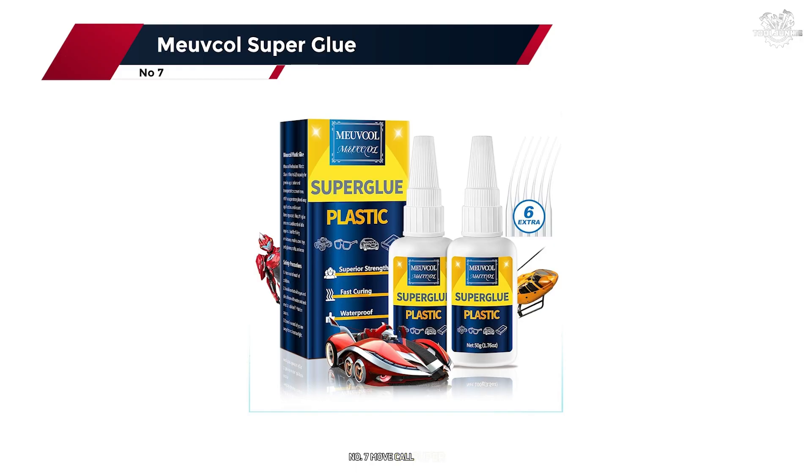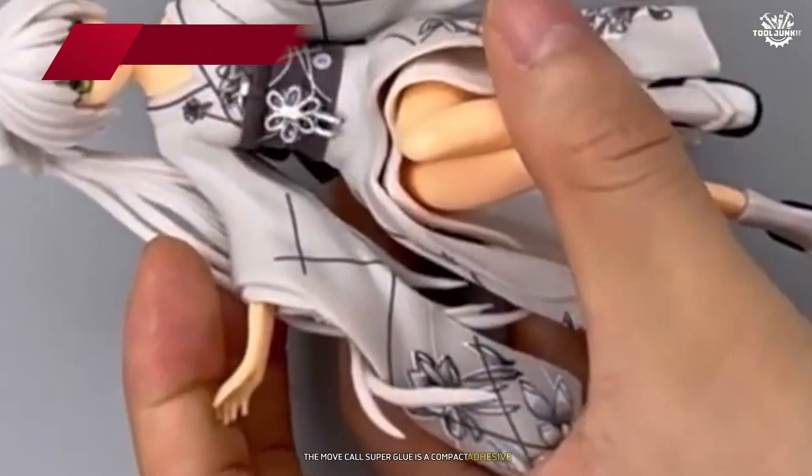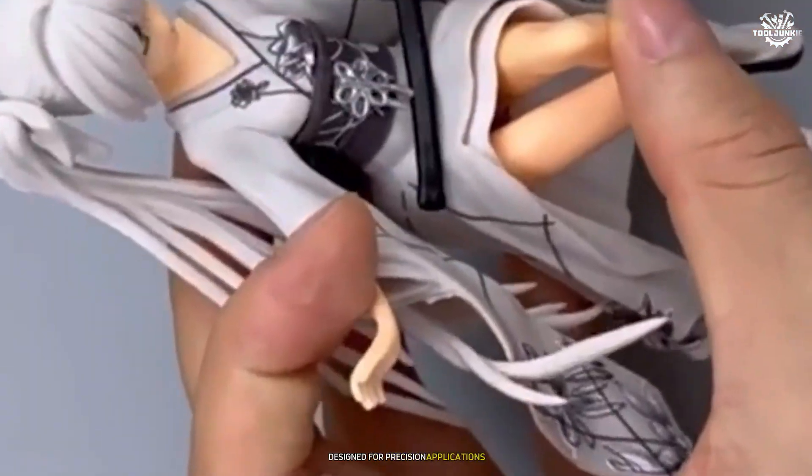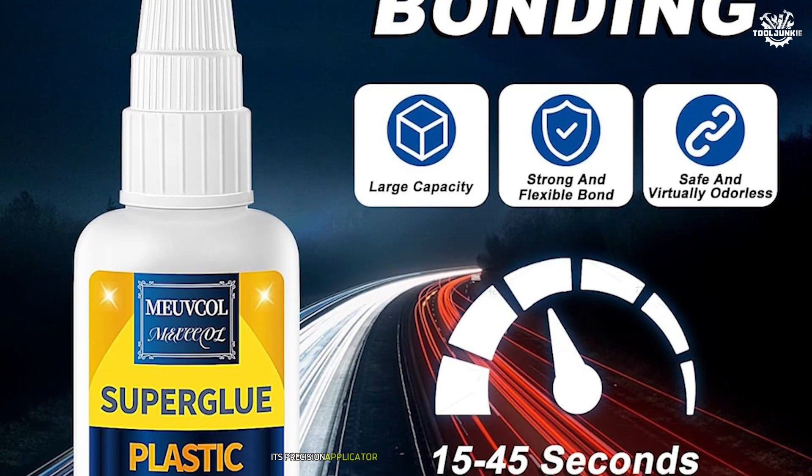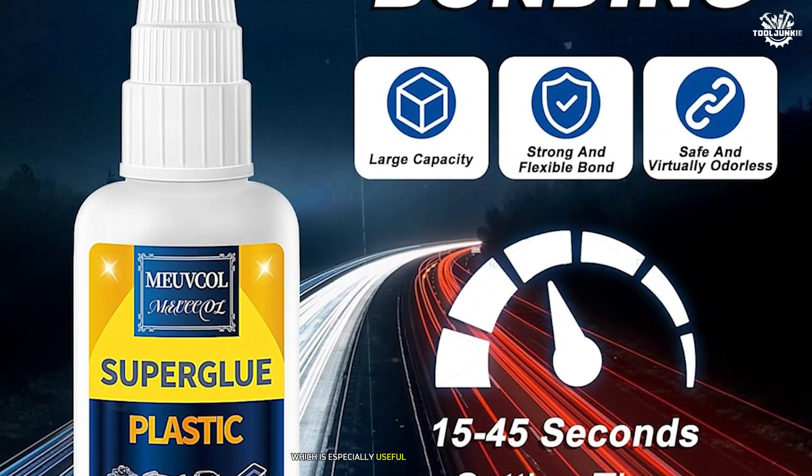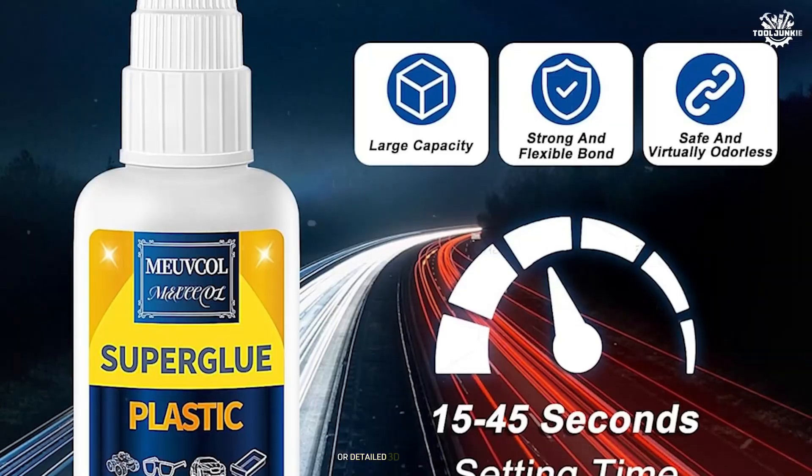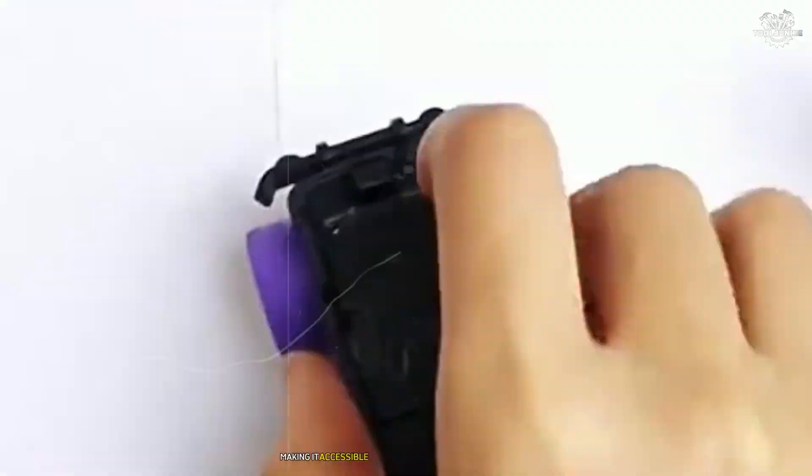Number seven, MoveCall Superglue. The MoveCall Superglue is a compact adhesive designed for precision applications, making it a viable option for PLA users who need to bond smaller parts or repair intricate details. Its precision applicator tip allows for controlled dispensing, which is especially useful when working on delicate or detailed 3D printed projects. The glue is affordable and easy to use, making it accessible for hobbyists and casual users alike.